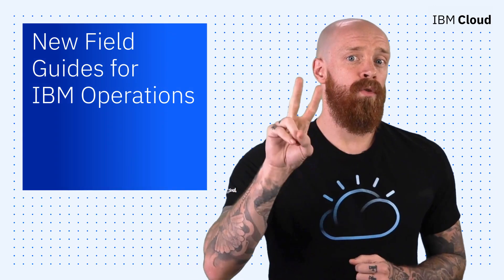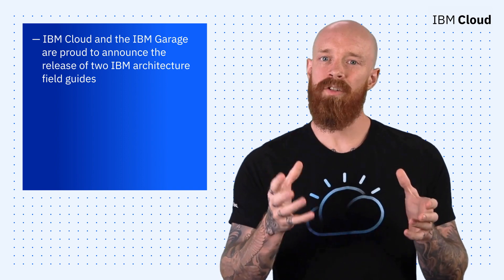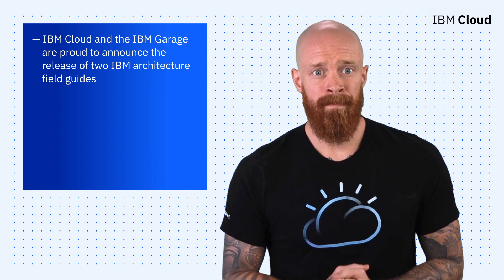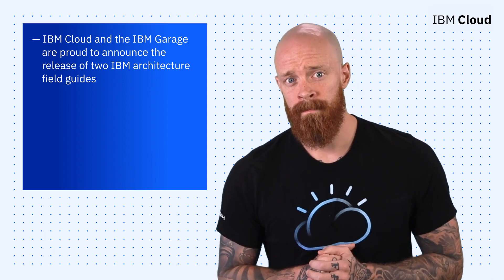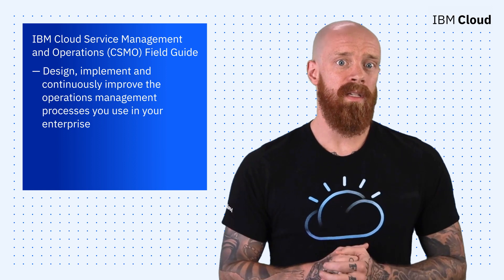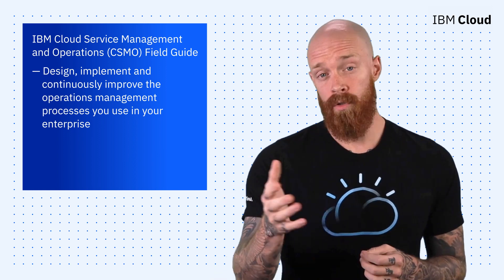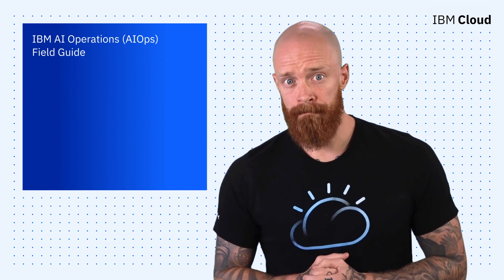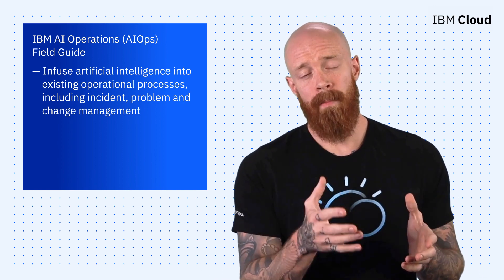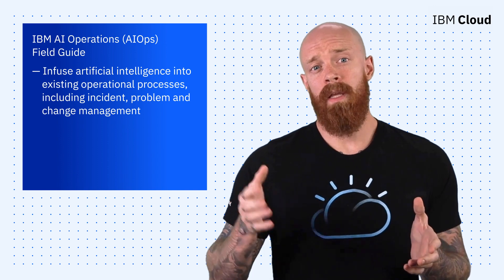To wrap things up today, I want to introduce two new IBM architecture field guides for IBM operations. These field guides are handy introductions to applying IBM's agile service management operations methodology to your organization and streamlining your processes. The first is the IBM Cloud Service Management and Operations Field Guide, which documents our approach to designing, implementing, and continuously improving the operations management processes you use in your enterprise. The second is the all new IBM AIOps Field Guide, which documents our approach to the infusion of artificial intelligence into existing operational processes, including incident, problem, and change management.